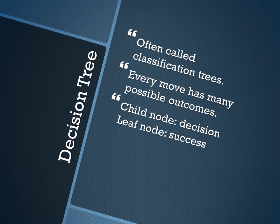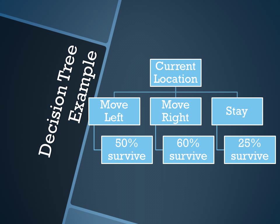Let's take a look at the decision tree, often called a classification tree. Basically, every move has many possible outcomes. A child node in the decision tree is a decision, whereas the leaf node is the success rate. Here's an example: you have a game, and your three options are either to move left, move right, or to stay. For generating a decision tree, your goal is to maximize your survival and to keep track of the survival rate for each move.